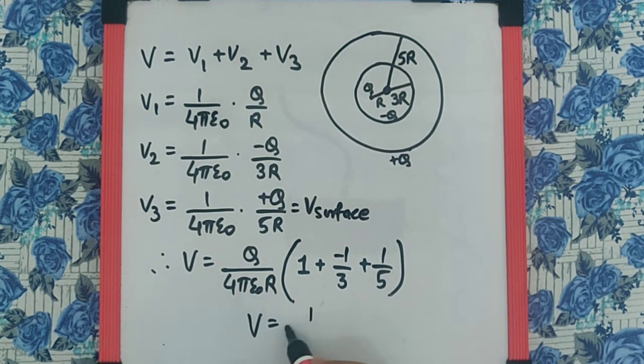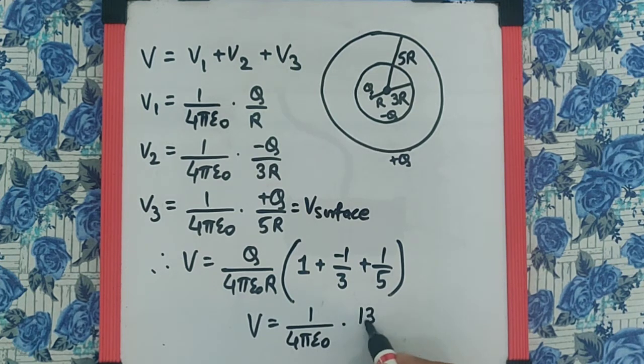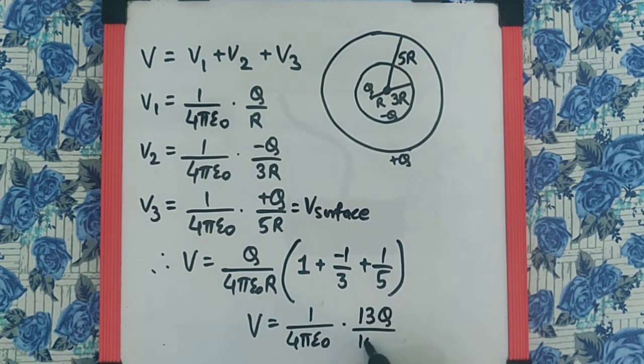And so, the final answer is 1 upon 4pi epsilon 0, 13q by 15r.